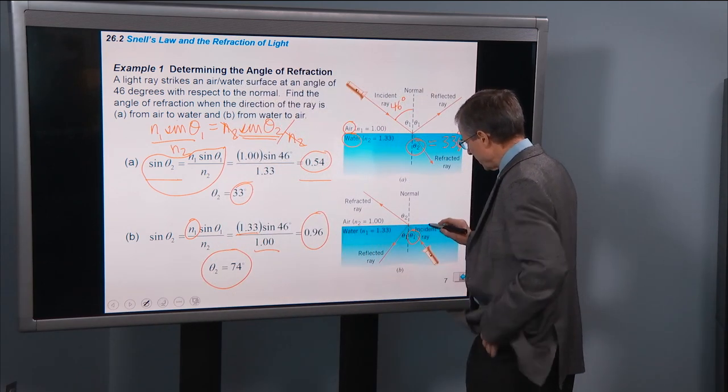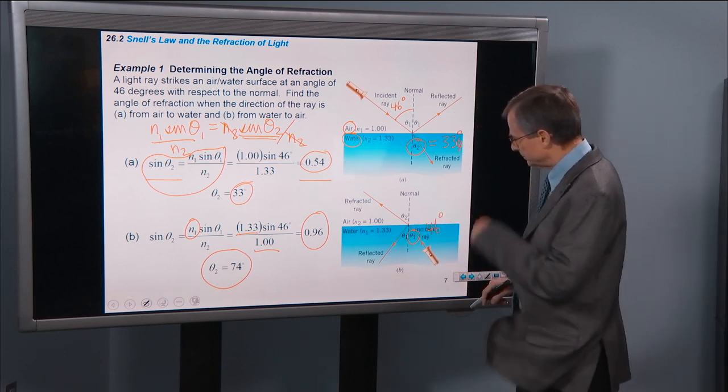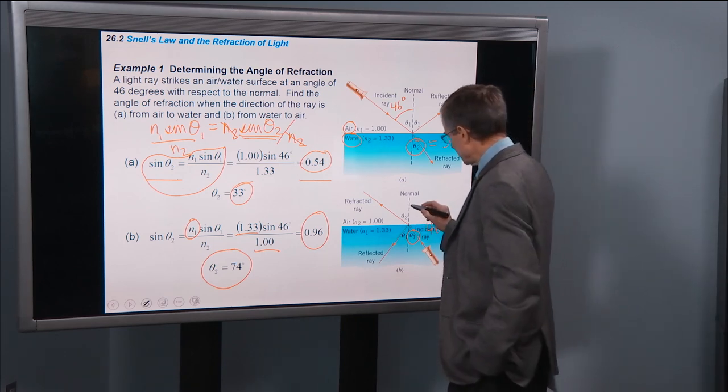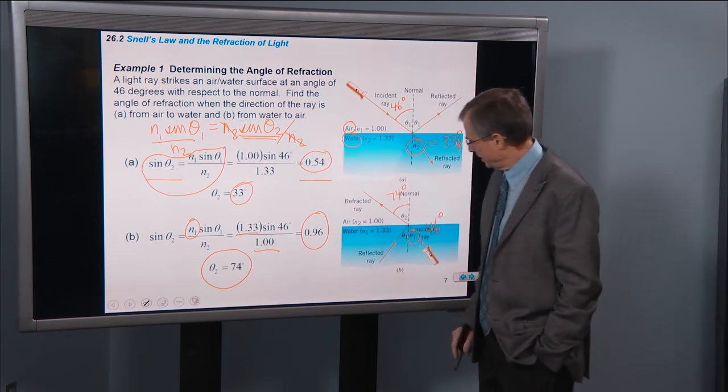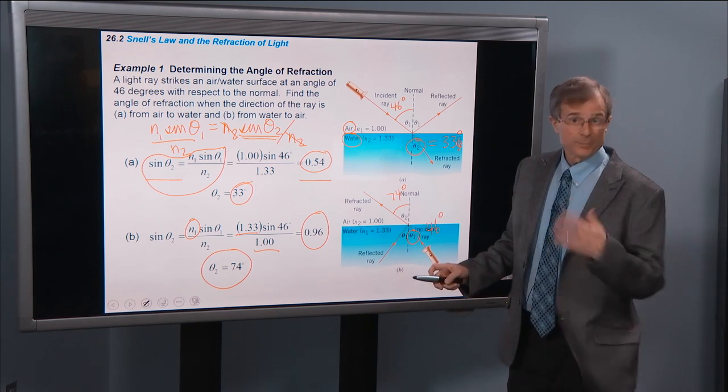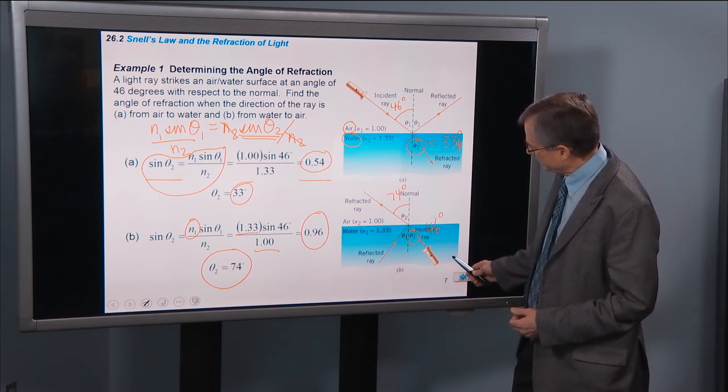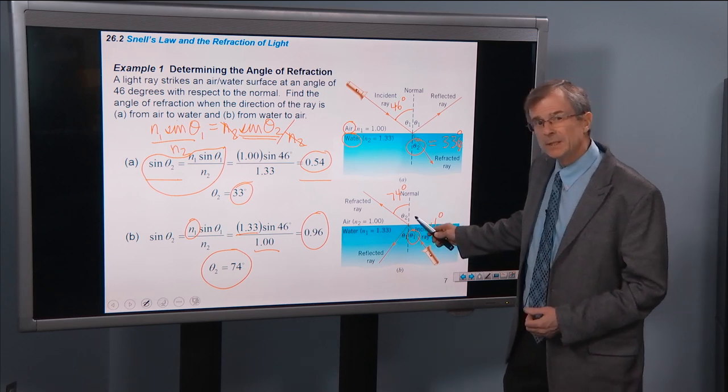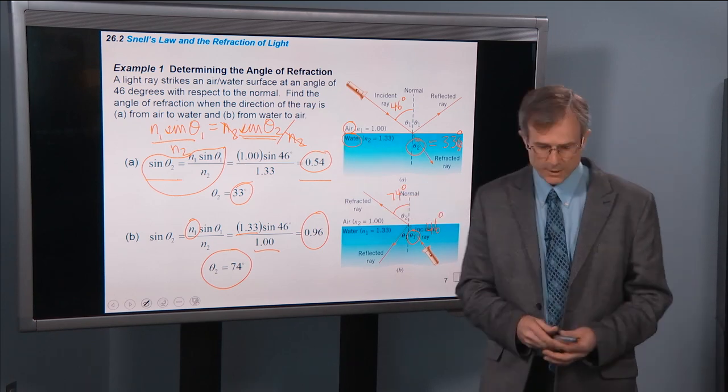So in this case we started off with 46 degrees in the water and then a much larger angle, 74 degrees out in the air. So another confirmation of the idea that a ray going into an optically less dense material, namely air, bends away from the normal direction.